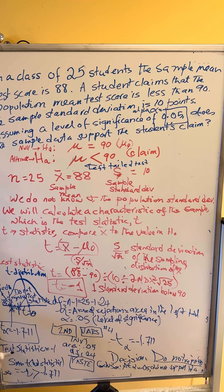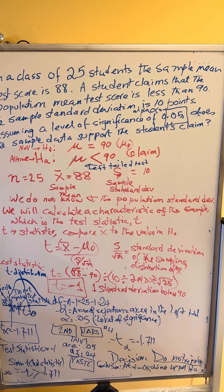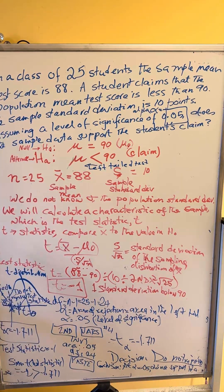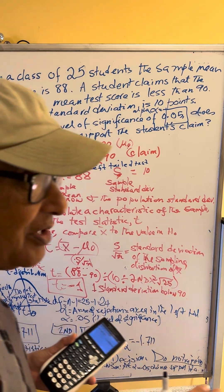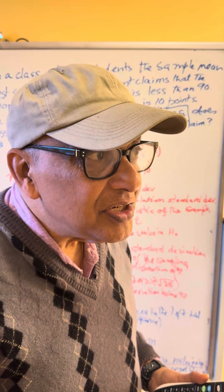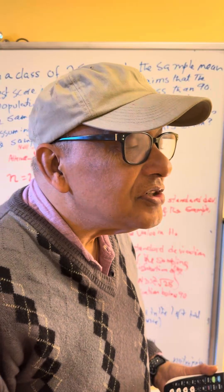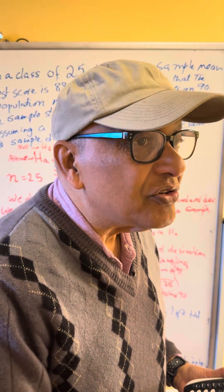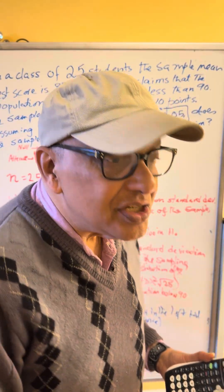The critical value, to the left of which is the rejection region, is minus 1.711. However, minus 1 falls in the region where we do not reject H0, since minus 1 is greater than the critical value of minus 1.711. Therefore the decision is: do not reject H0, and the conclusion is: at alpha equal to 0.05, we do not support H-A because H0 stays. This is analogous to the jury-based trial system where they did not get enough evidence to support the alternate that the defendant is guilty — therefore the decision was to not reject H0, meaning not reject the fact that the defendant is innocent.